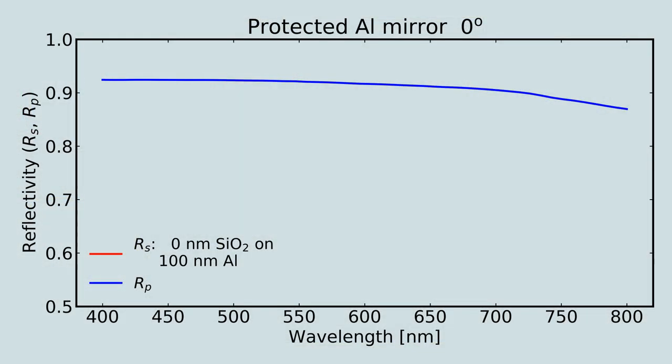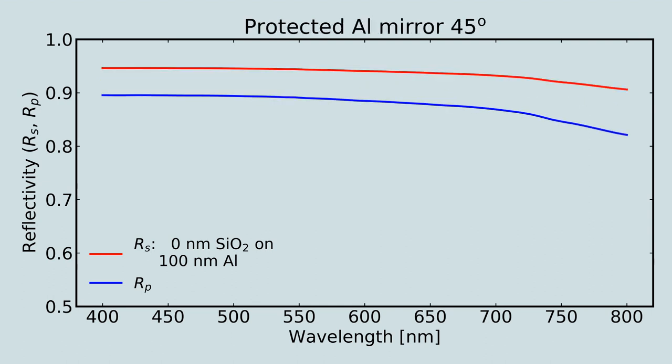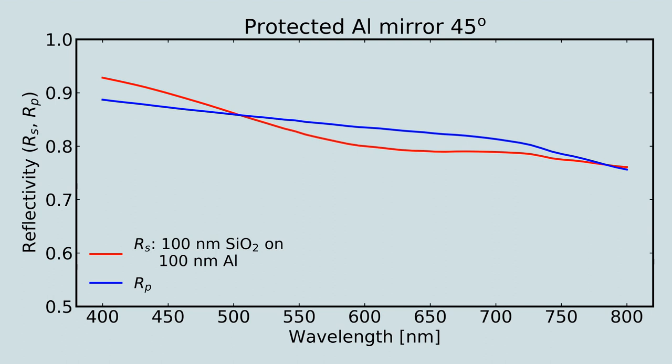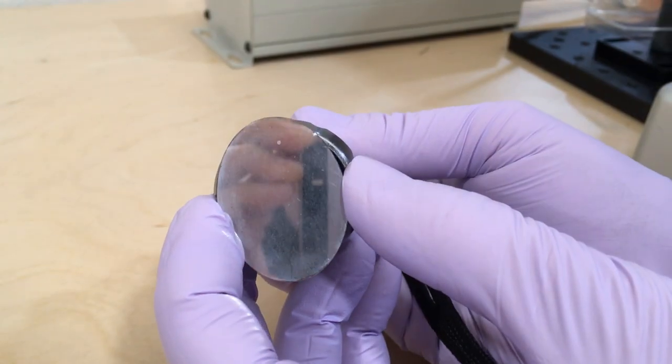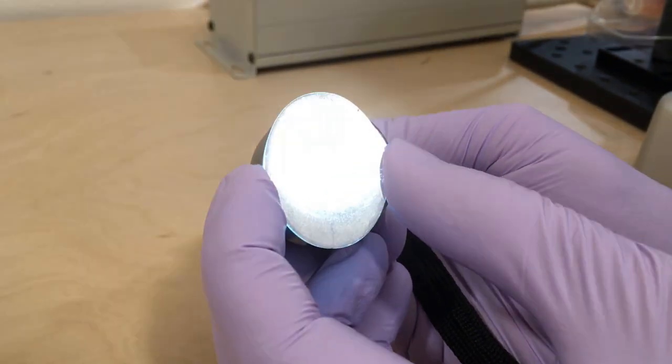Measurement and modeling is important because performance depends strongly on wavelength, angle of incidence and polarization state, layer thickness, and fabrication process. Moreover, coatings suffer degradation over time depending on environmental conditions.